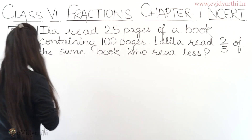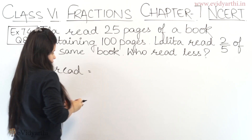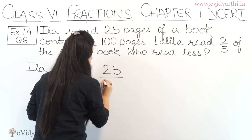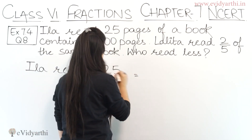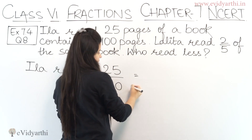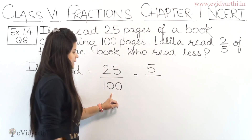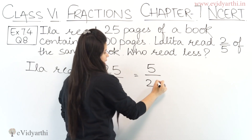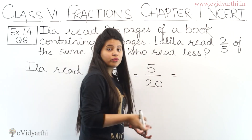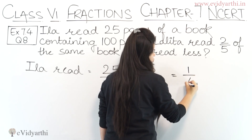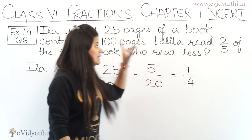Let's first find the fraction for Ella. We have read 25 pages out of 100, so this gives us 25 upon 100. Now we will reduce it to simplest form. Dividing by 5: 5 into 5 is 25, and 100 divided by 5 is 20, giving us 5 upon 20. Then dividing again by 5: 5 once is 5 and 5 into 4 is 20. So Ella's fraction is 1 upon 4 — meaning she read 1 upon 4th part of the book.